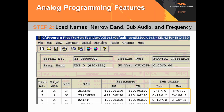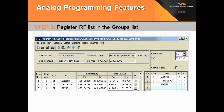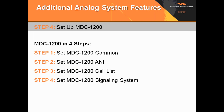Now, this next step, we're going to go ahead and register our RF list and our group lists. As you can see here, our RF group list is assigned to each channel on the channel selector knob. Channel 1 is selected and is utilizing list 1 in the RF list. Channel 2 is using list 2, and channel 3 is using list 3. If you do not assign these RF lists to the channels and you go to write it into the radio, you will only have one channel.